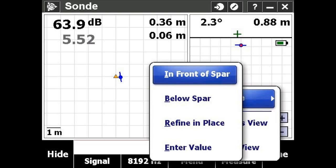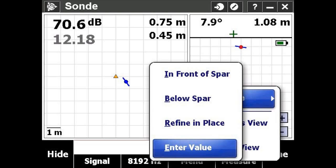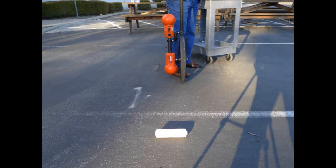You can calibrate a sonde by placing it in front of the spar, below the spar, or by entering its calibration value. We'll begin with calibration in front of the spar.